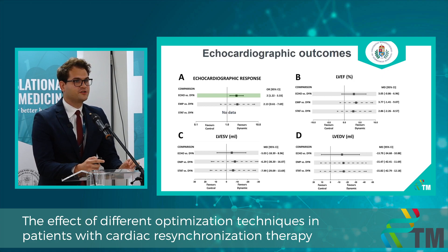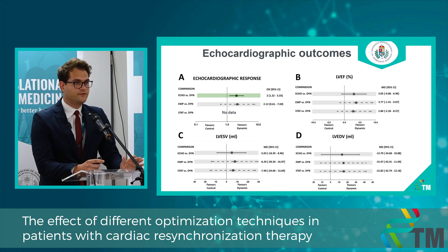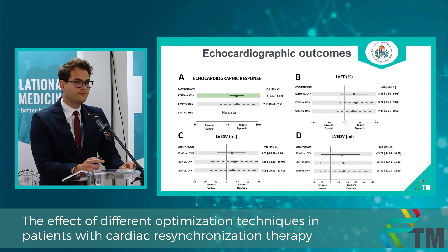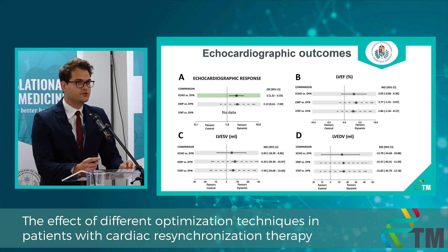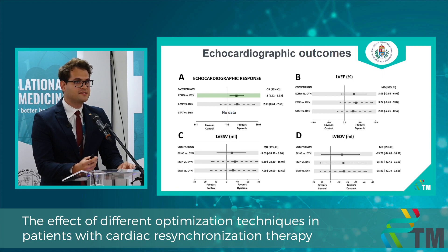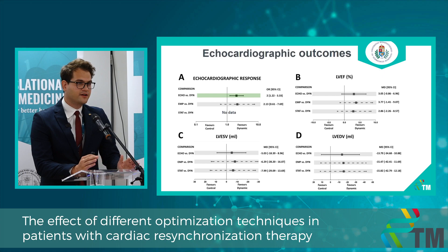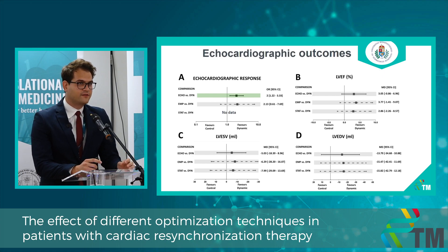An important thing to mention is that on the forest plots, in the rows you cannot see individual studies — instead, we presented each treatment in each row compared to dynamic optimization. This way the rows represent the final diamond of a usual forest plot. You may also notice dashed lines, which means that particular comparison was not investigated in a real-life clinical trial — it is only an indirect network estimate.